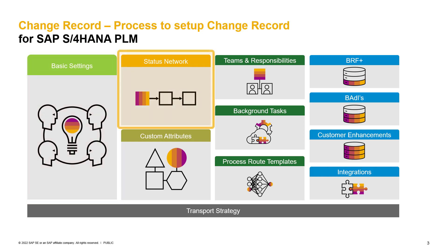One of the next important questions is all about your change record status network. For example, which statuses do you want to have available, and which status actions are required to get a more detailed view of your status network? You should also define how the statuses and status actions are connected to each other. An important question would also be: do you want to integrate the change master into the change record? If yes, on which status do you want the change record to create a change number, and on which status do you want the change number to get closed?